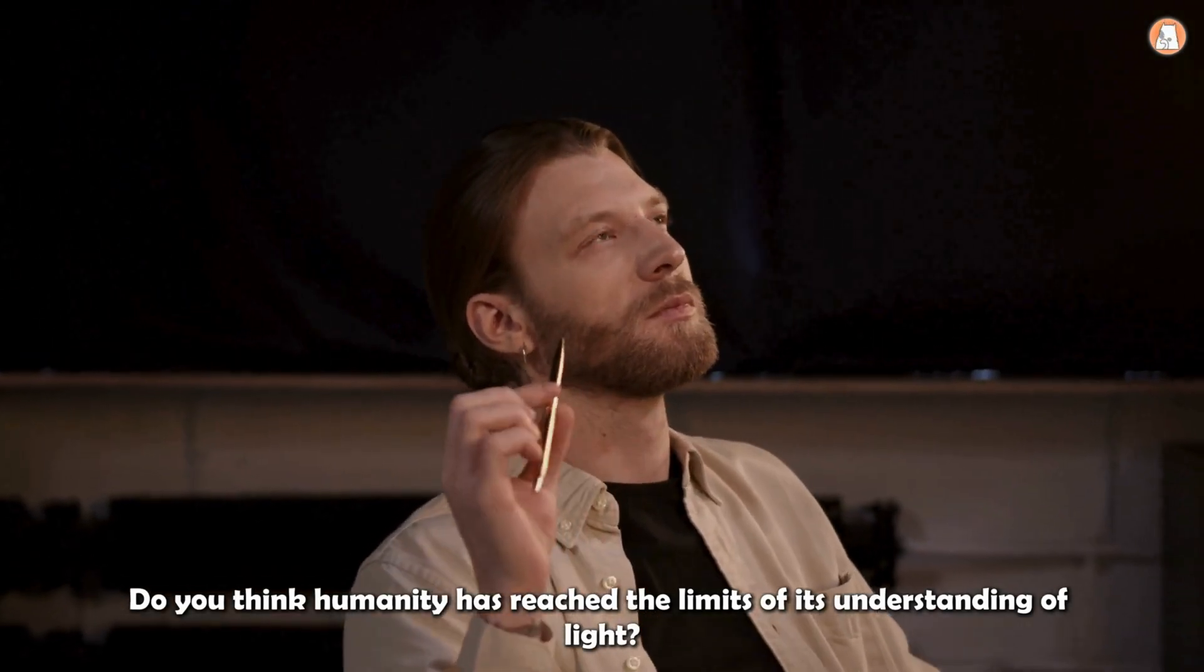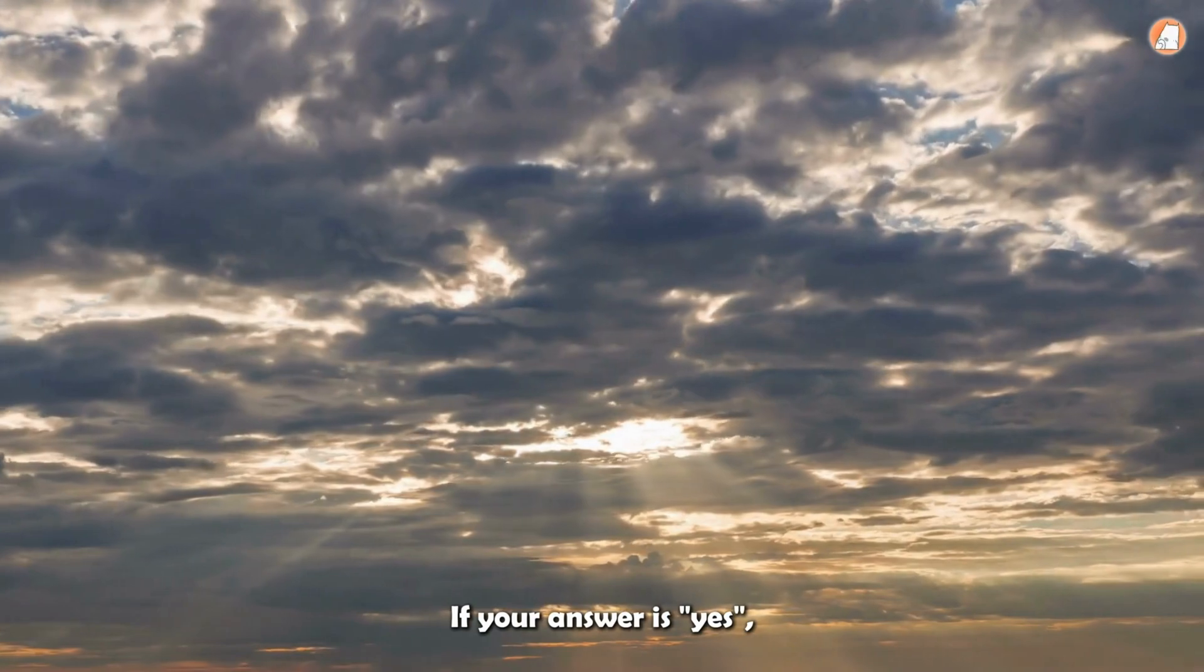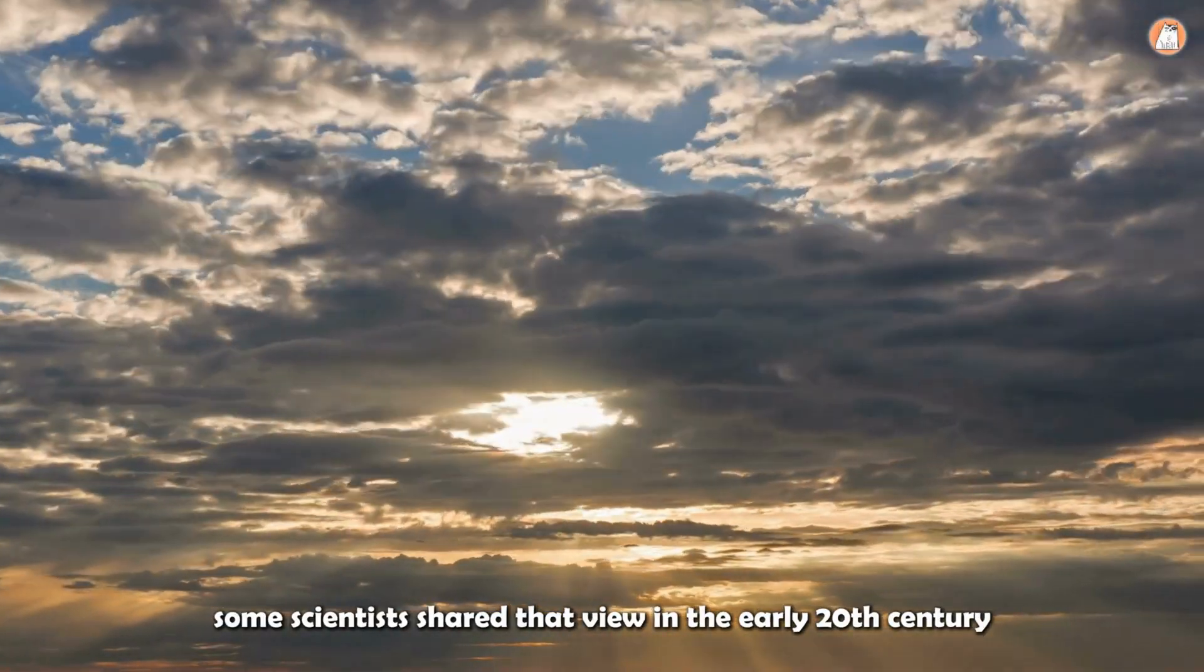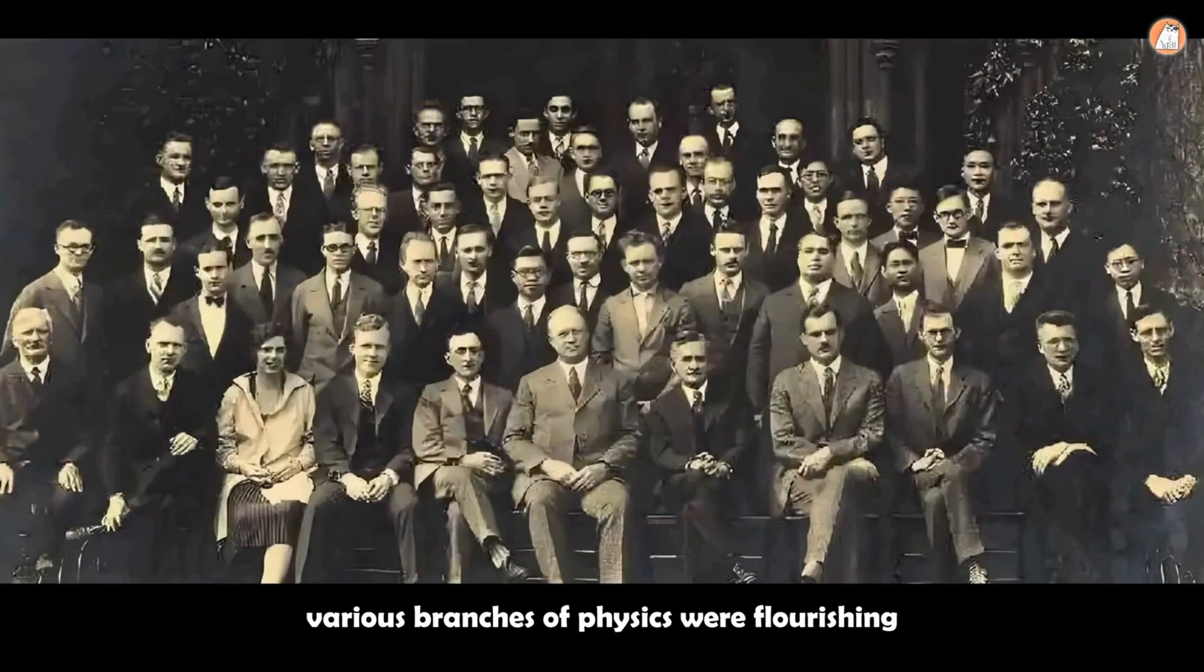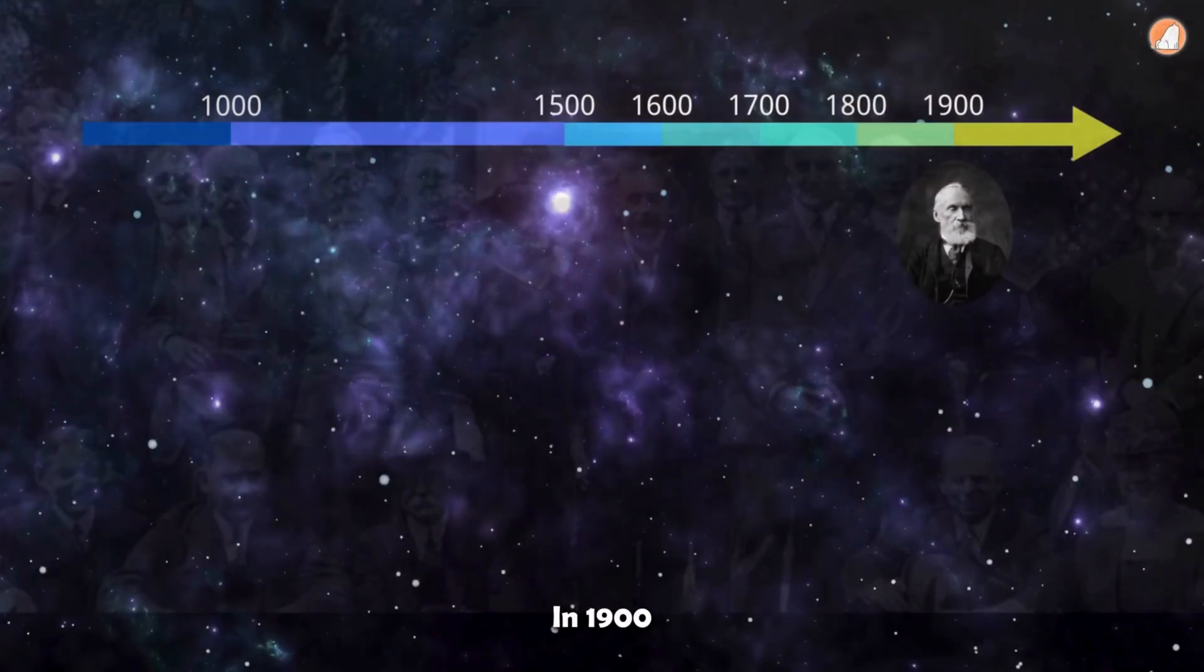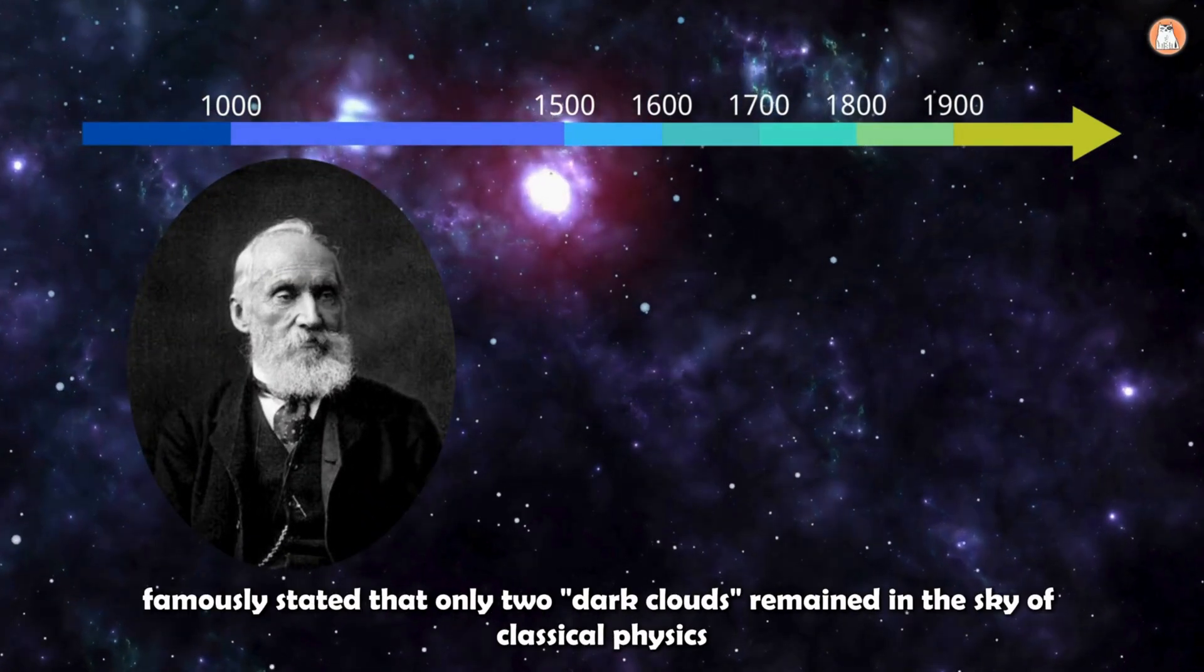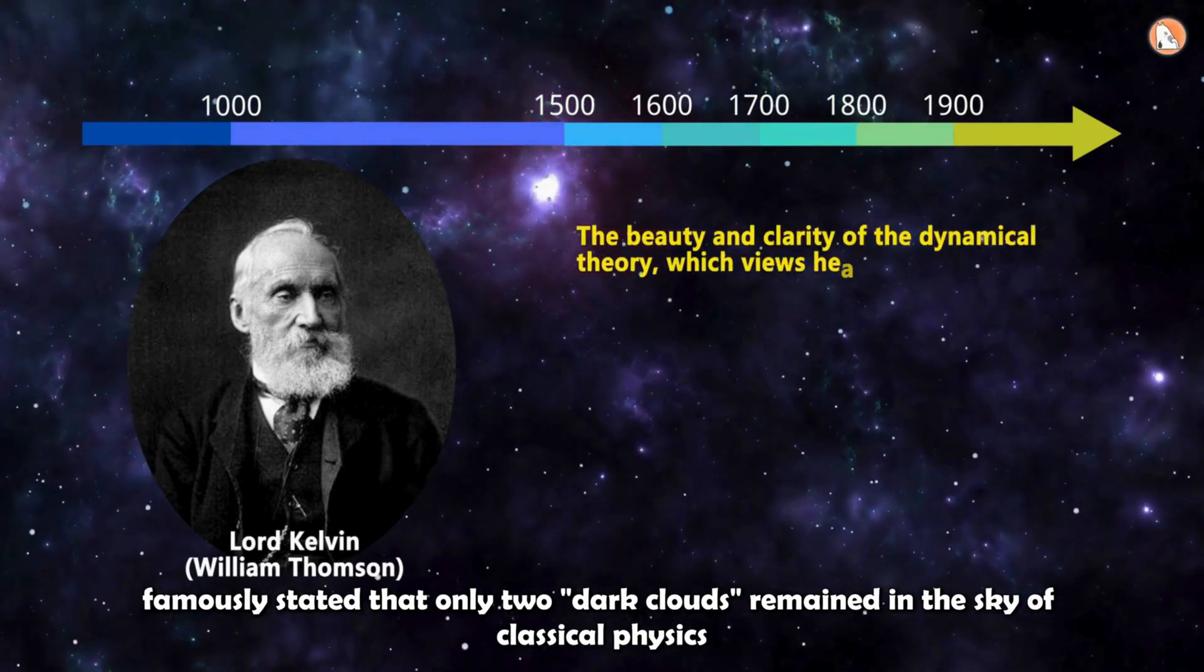Do you think humanity has reached the limits of its understanding of light? If your answer is yes, it wouldn't be surprising. Some scientists shared that view in the early 20th century. At the time, various branches of physics were flourishing, and many believed that the framework of classical physics was nearly perfect. In 1900, British physicist Lord Kelvin famously stated that only two dark clouds remained in the sky of classical physics.